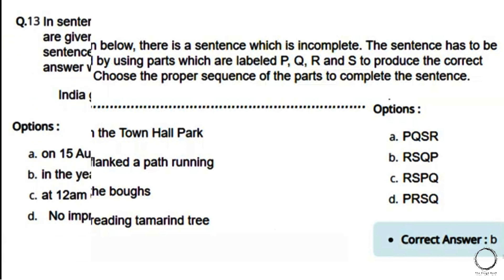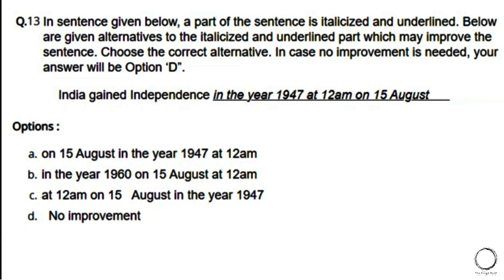Next: A part of the sentence is underlined — choose the alternative that improves it, or D if no improvement is needed. Sentence: 'India gained independence in the year 1947 at 12 AM on 15th August.' Options: a) on 15th August in the year 1947 at 12 AM, b) in the year 1960 on 15th August at 12 AM, c) at 12 AM on 15th August in the year 1947, d) no improvement. Option B is ruled out; the right answer is option C — at 12 AM on 15th August in the year 1947.